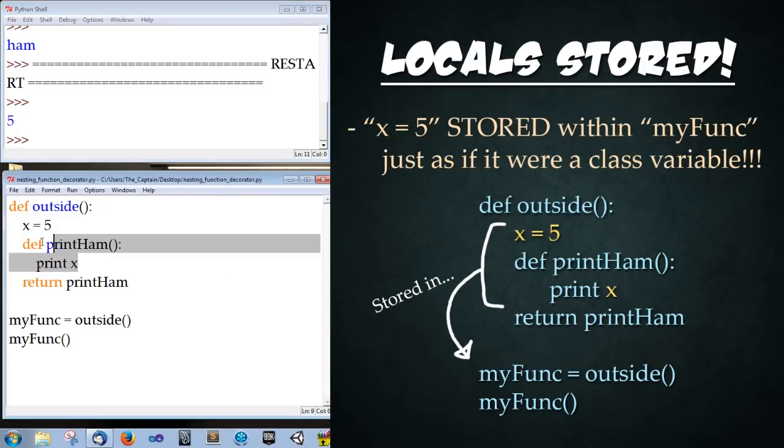So what's happening is at the time of definition when we declare print ham it's taking a snapshot of all variables that print ham has access to. And since x equals 5 is technically global to print ham it stores it within that snapshot. It's almost as if this is a class instead of a definition and it has local variables and then it has functions that have access to those variables at the time of its creation. That is really freaking cool is it not?